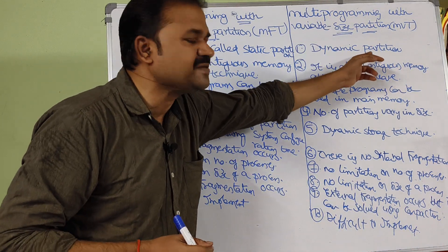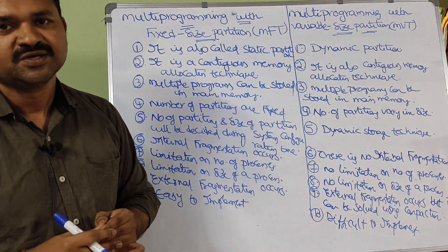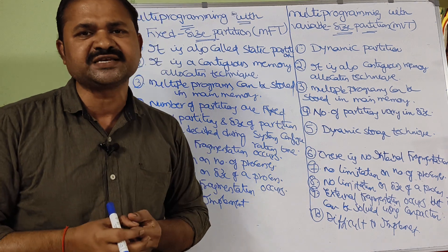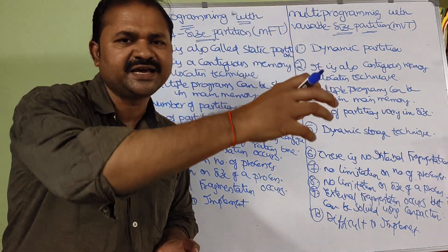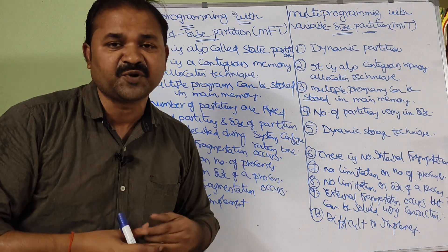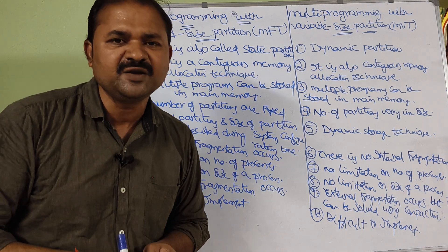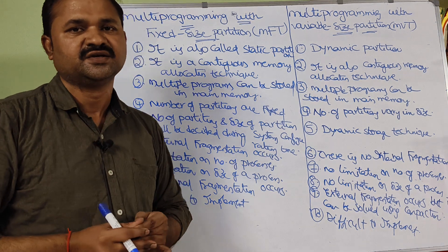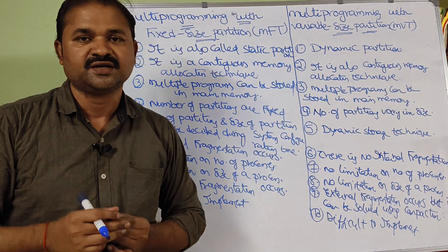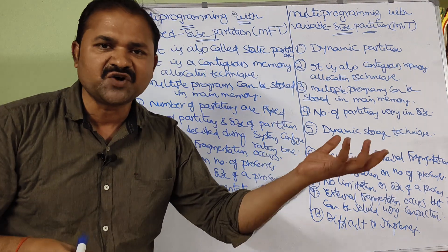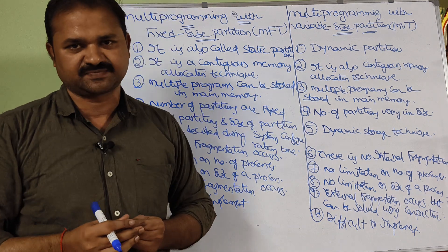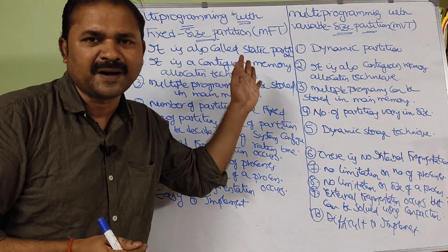In contrast, MVT is a dynamic partition technique. Here the main memory starts empty, and memory is allocated dynamically for each process. If we have 5 processes, memory is allocated for those 5; if we have 30 processes, memory is allocated for all 30. The operating system allocates memory according to the size of each process, while in MFT all partitions are fixed.